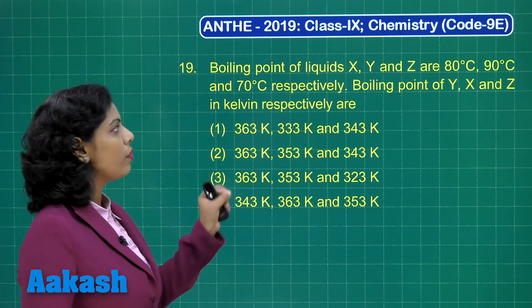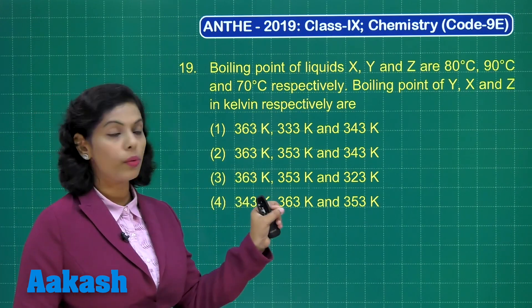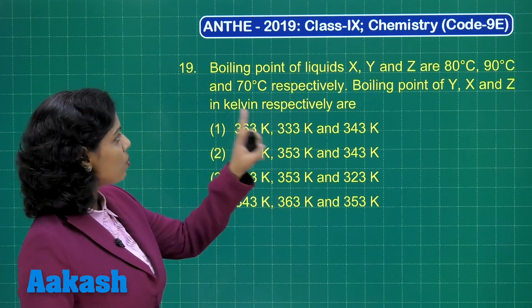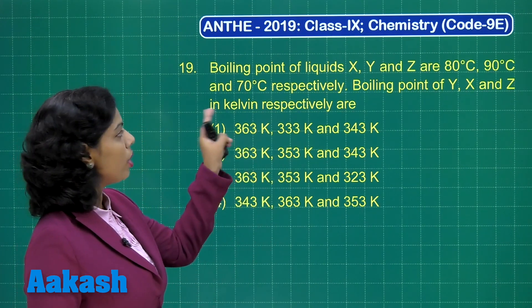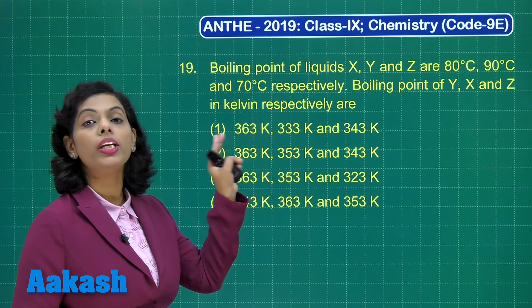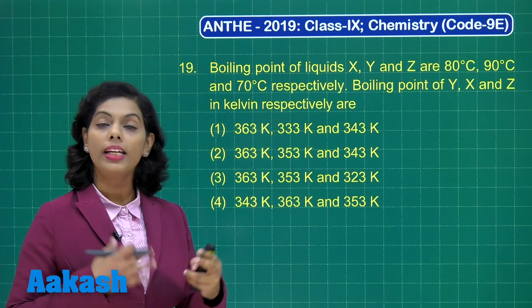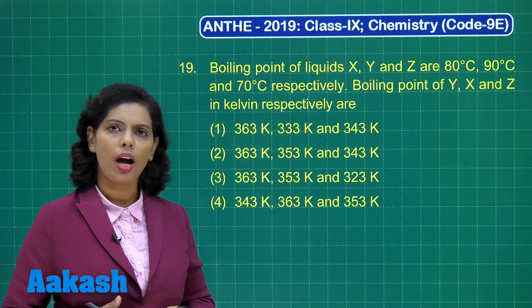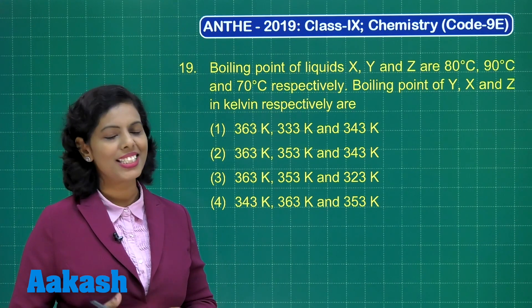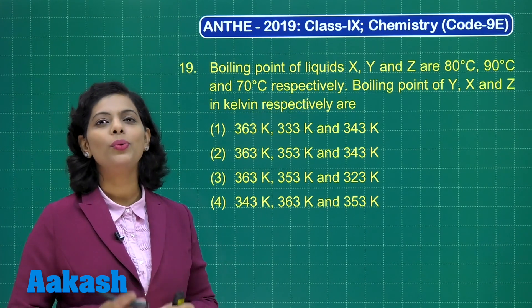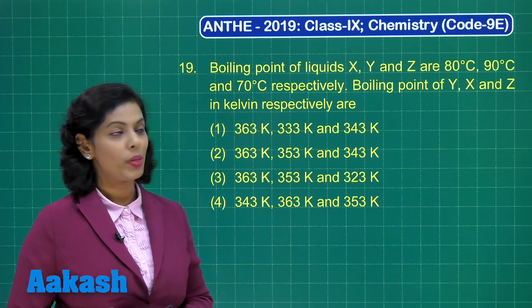Very simple — we have the three liquids X, Y and Z and their boiling points are given. We need to just convert them into Kelvin by adding 273.